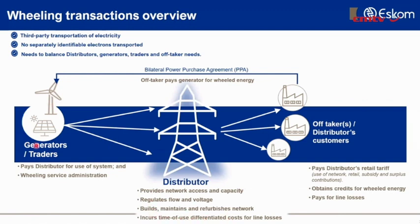For example, if generator A sends 100 kilowatt hours intended for various customers, those customers in total will not necessarily see 100 kilowatt hours. They will see slightly less — maybe 98 or 97, that kind of thing. So the distributor is facing those costs. When the distributor recognizes that energy and facilitates the allocation to the various offtakers, it will credit those offtakers on their tariff for the energy portion, but at a rate that accounts for the line losses the distributor has incurred.